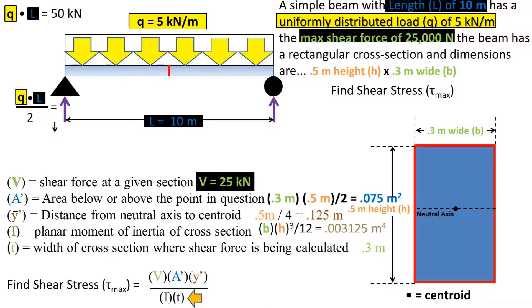The final variable is the thickness, which for a rectangle has the same thickness across all points, which in this case is the base of 0.3 meters.